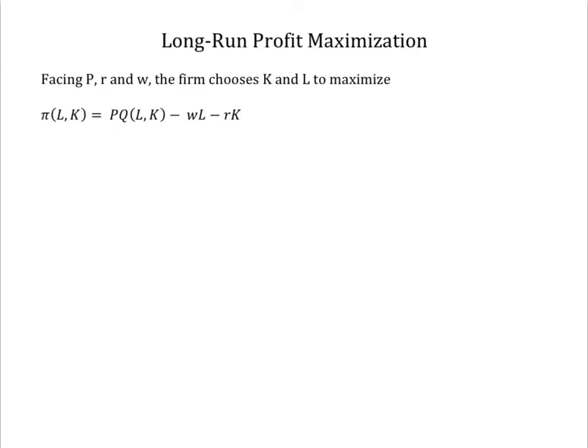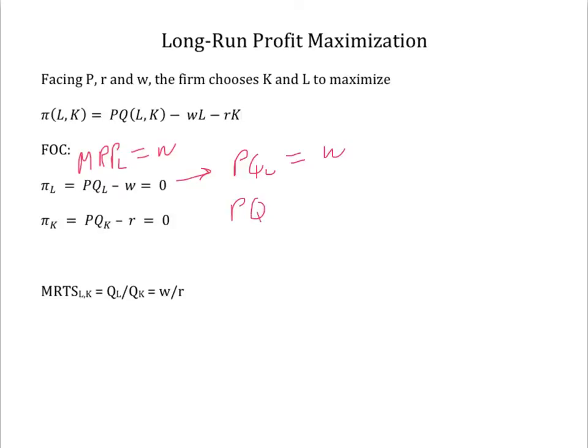From the first order conditions for a maximum, we can see both that the marginal revenue product of an input will be equal to its input price, but also that the marginal rate of technical substitution in production will equal the ratio of the input prices. To see this, we can solve each of the first order conditions: P Q sub L equals W, and P Q sub K equals R. Divide the first by the second, the P's cancel, substitute W over R, and we get our result.